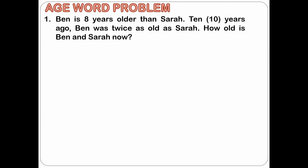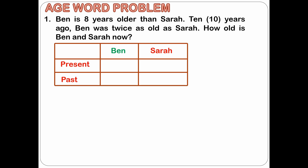Here is our problem number 1. Ben is 8 years older than Sarah. 10 years ago, Ben was twice as old as Sarah. How old is Ben and Sarah now? Notice in the problem that there are two keywords you need to be concerned with: the present and the past. There are two persons involved: Ben and Sarah. The best way to start solving this type of problem is to set up a table to clearly write an equation for each person under the present and past time period.